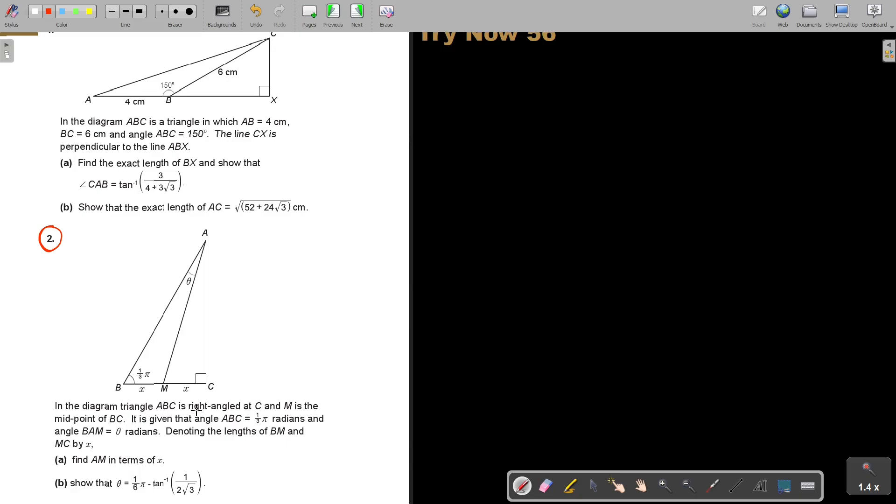Let's just start. I'm going to make use of the sketch. In the diagram, triangle ABC is a right angle at C, and M is the midpoint of BC. This is very important. It is given that angle ABC is a third pi radians, our special angles. Angle BAM is theta radians. Denote the length of BM and MC by X. Find AM in terms of X.